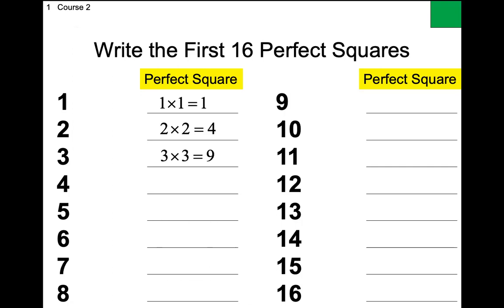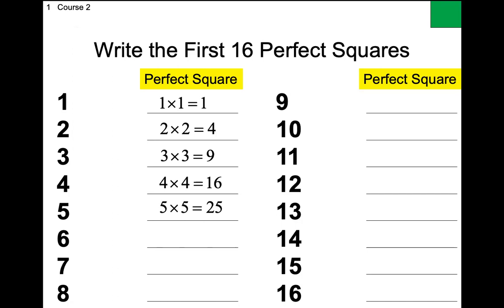So it goes 1, 4, 9, and so forth — those are your perfect squares. This seems like a silly thing to do, but these are the numbers you have to memorize. The first 16 perfect squares. Tonight for homework there might be some that are larger than these, but they will be recognizable. The next ones are 16, 25, 36.